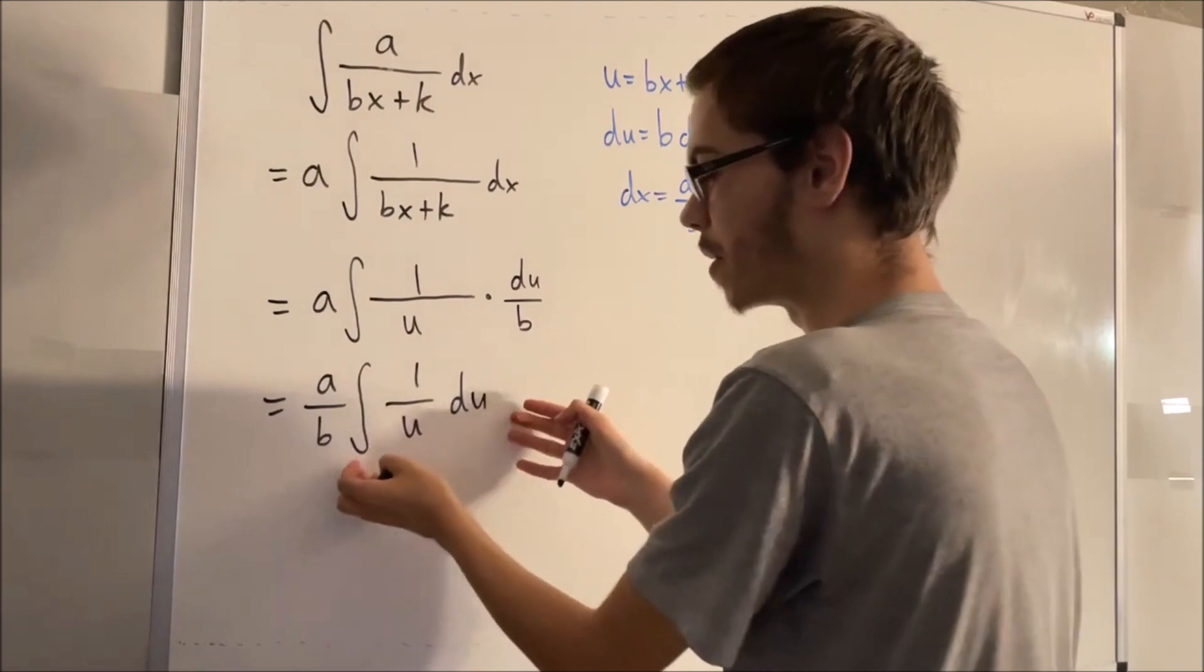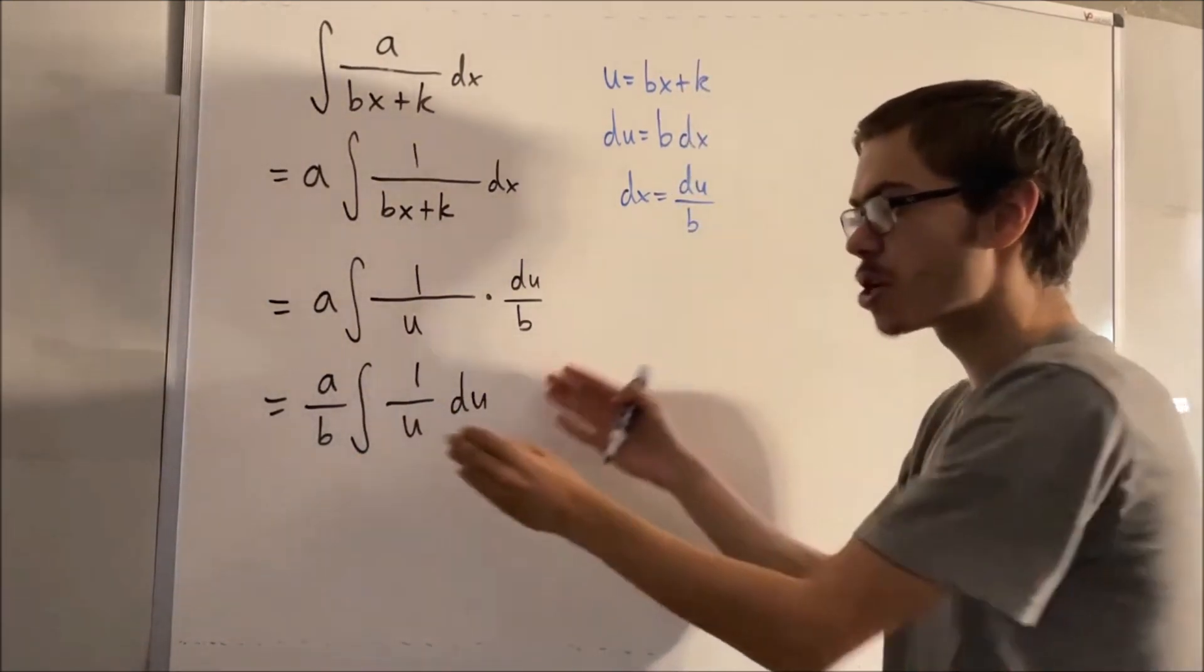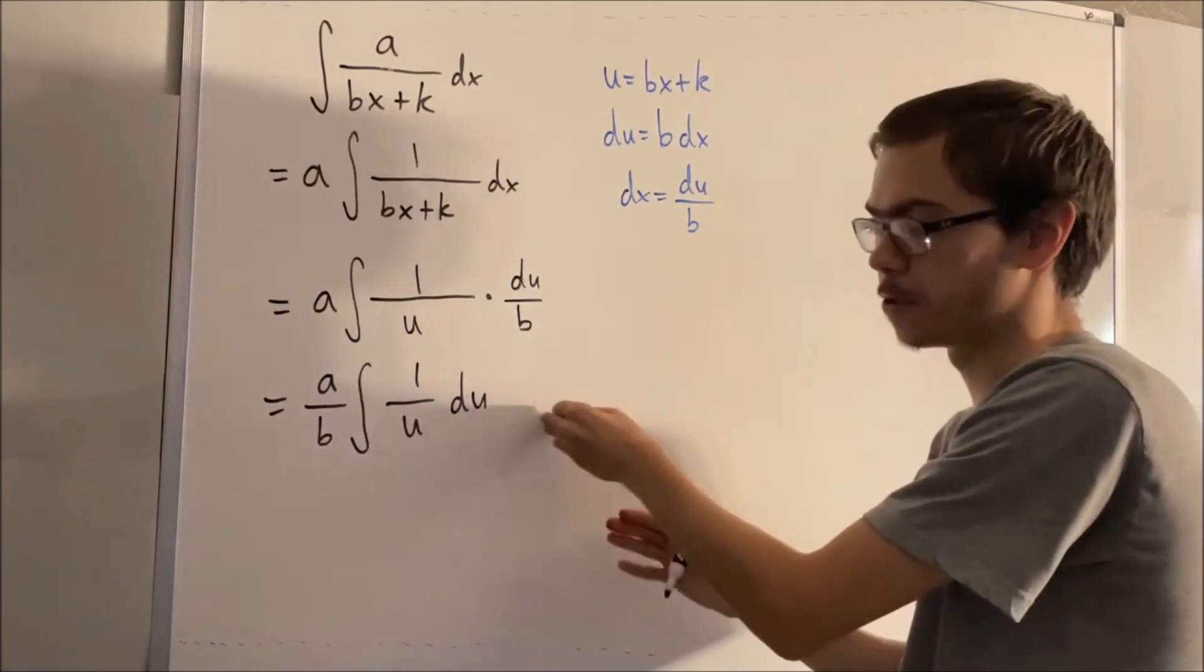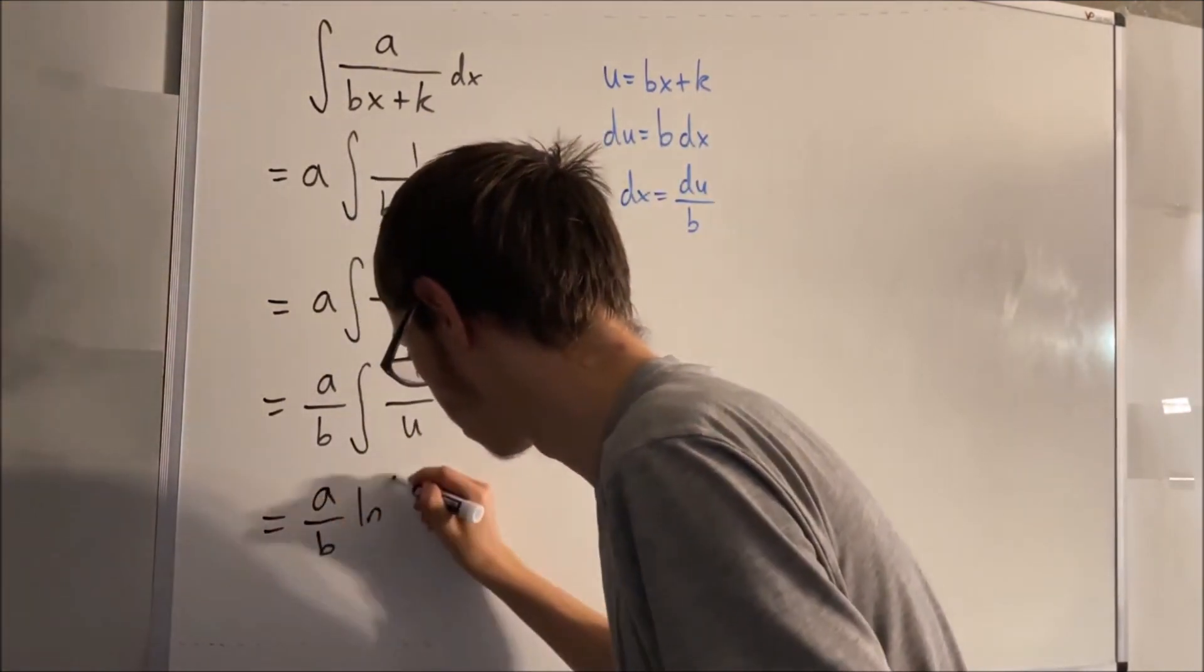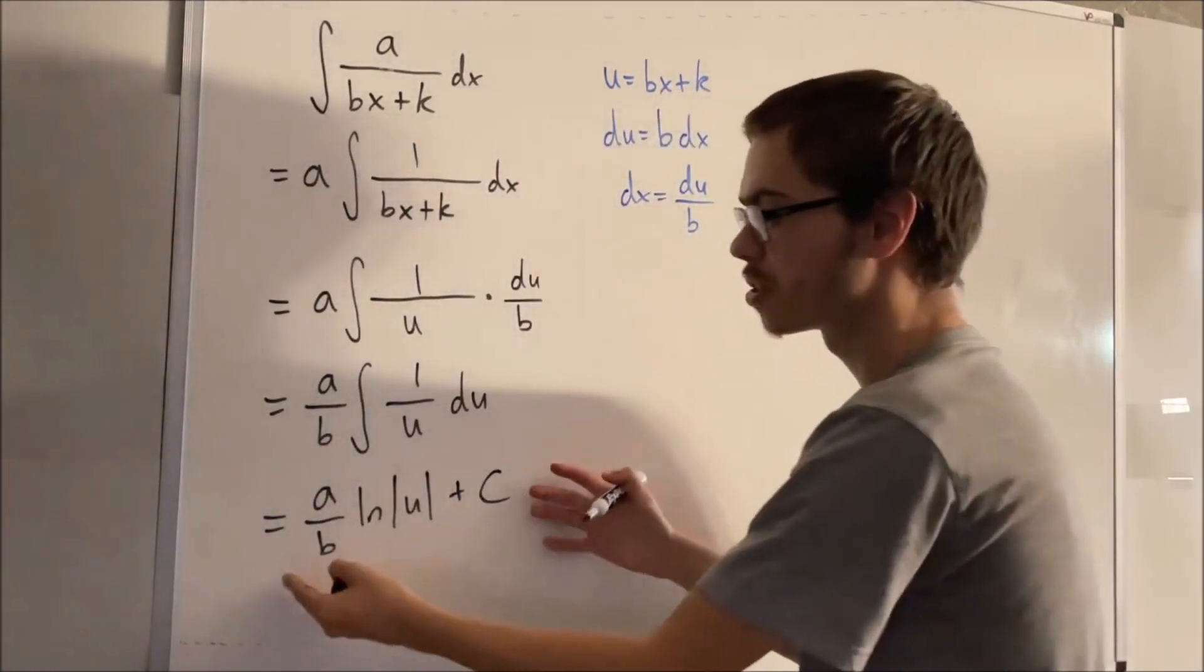And this is the integral that we were talking about at the beginning of this video, the integral of 1 over x dx. And we know that this integral is just the natural log of the absolute value of u. And so this is really what we get when we evaluate this integral.